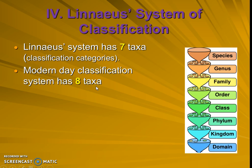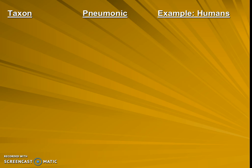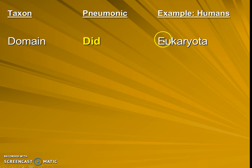You will need to know these categories in their correct order from smallest to biggest or the other way around. To help us memorize them, we have a memory tool, a mnemonic device. Let's write it down using humans as an example. The biggest category — domain — for us is eukaryote. We are eukaryotes because we have a nucleus. For the mnemonic device, D for domain, we're going to use the word 'did.'